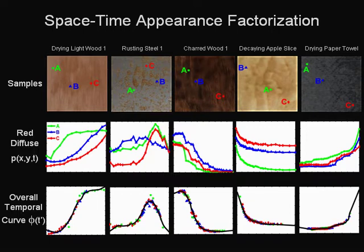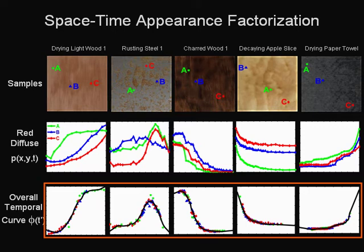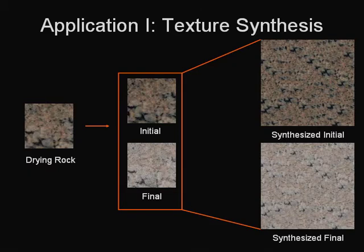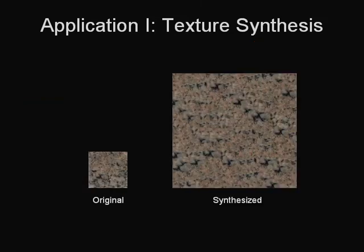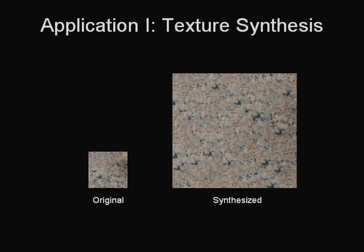The STAF model is accurate for the broad range of examples in our database. As seen in the bottom row, the time varying curves from different spatial locations are well aligned. We now show how the STAF model can be used for a variety of rendering applications. The texture synthesis of time-varying appearance can be reduced to standard 2D texture synthesis using the space-time appearance factorization. In this example, we create a larger spatial texture for the drying rock example while preserving the overall temporal variation and drying pattern.